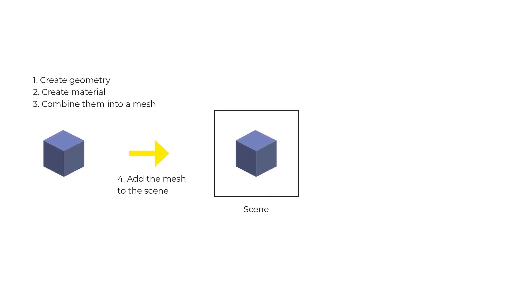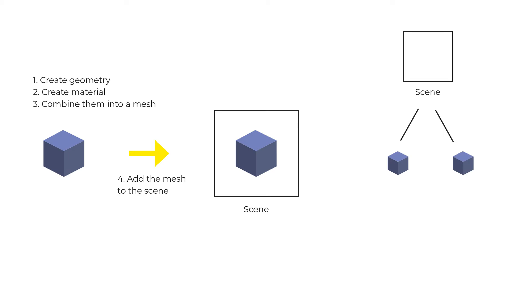In the previous tutorial we learned that in order to show something on the screen we need to create it then add it to the scene. Another way to express that is that the scene is a parent node and all the elements we add to it — like the lights and meshes — are the children nodes. These children nodes can also be parents of other children nodes, meaning we can create an object, add it to the scene, then create another one and append it to that object. But what does that have to do with rotation?